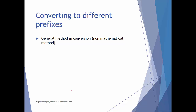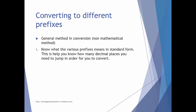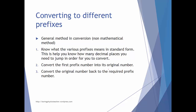We are going to show you a general non-mathematical method for conversion. The general method is to know what the various prefixes mean in standard form, which tells you how many decimal places you need to move. First, convert the number with the first prefix back to its original base number, and then convert that original number to the required prefix. For example, to convert micrometers to nanometers, first convert micrometers to the base number, then convert to nanometers.